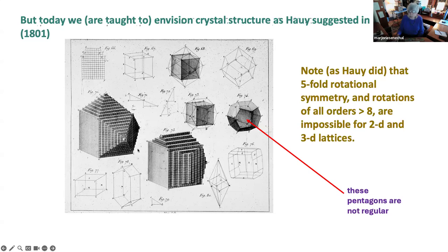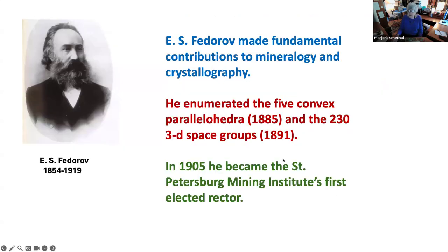One thing Haüy noticed is that none of the crystals that people had found had five-fold symmetry. He was able to show that if you have a lattice structure, that's impossible — lattices are incompatible with five-fold symmetry or any symmetry of order greater than six. This became known as the crystallographic restriction on symmetry. This drawing is a pentagonal dodecahedron, but not a regular one, because otherwise you would have five-fold symmetry and you can't. Then we come to Fedorov, who made fundamental contributions to mineralogy and crystallography, enumerating the five convex parallelohedra in 1885 and the 230 3D space groups in 1891.